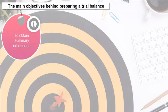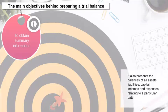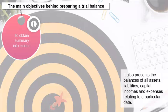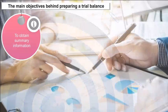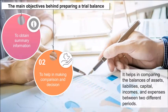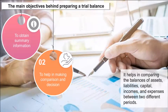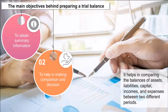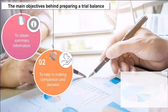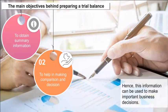The main objectives of preparing a trial balance are: 1. To obtain summary information — it provides summary information of all ledger accounts, presenting balances of all assets, liabilities, capital, incomes and expenses relating to a particular date. 2. To help in making comparison and decision — it helps in comparing balances of assets, liabilities, capital, incomes and expenses between two different periods, and this information can be used to make important business decisions.